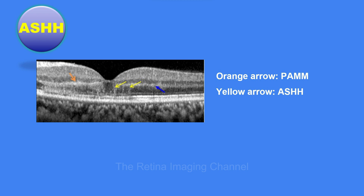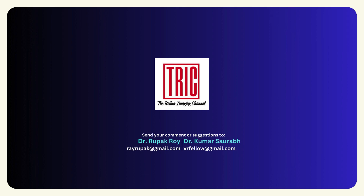So this is how we understand what ASHH means, how it looks, and how it is formed. It is an OCT sign seen in AMN and many other retinal diseases. In other retinal diseases, we should mark the OCT as having ASHH and not as AMN. Thank you for watching. We really hope you found this and other videos informative. Do subscribe to the Retina Imaging Channel and spread the word. Thank you very much.